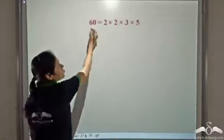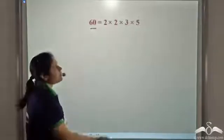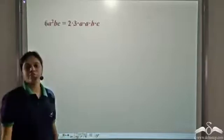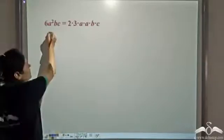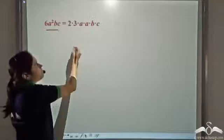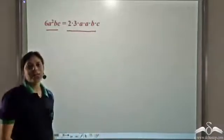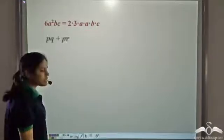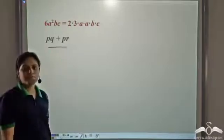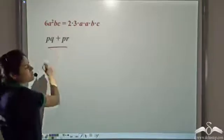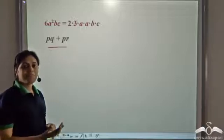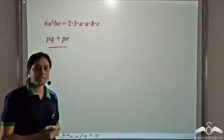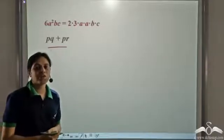In arithmetic, we have seen how to write a number as a product of its prime factors. We have learnt a similar thing for algebra. If we have a term, we can write it in its product form, i.e., as a product of its irreducible factors. But what if we have expressions containing more than one term? Do these expressions also have factors? Can we write these expressions as a product of their factors? Well yes, we can, and we will also learn how to do it.